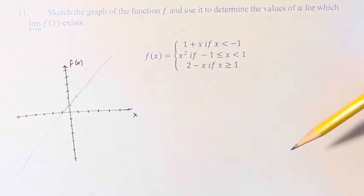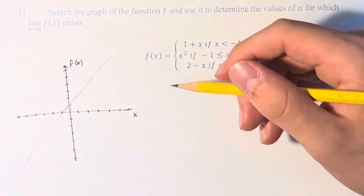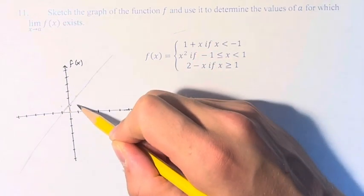Next we have x squared. So this is just the general shape of the parabola, and I think it's helpful to plot some of the key points. So we have 0, 0, and then negative 1, 1 and 1, 1.